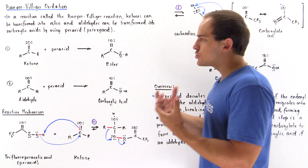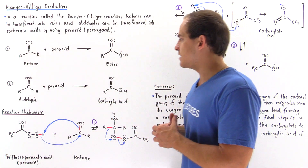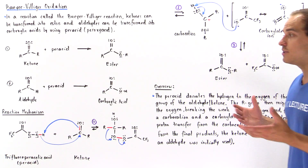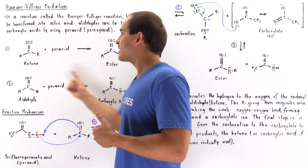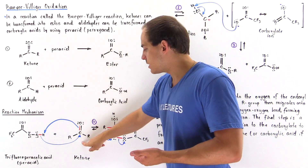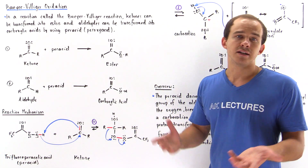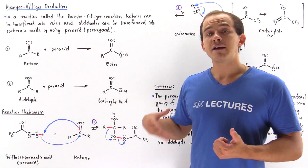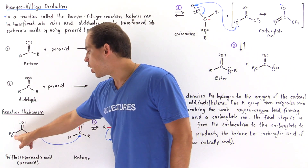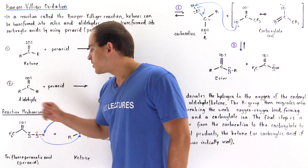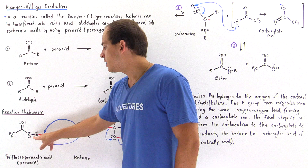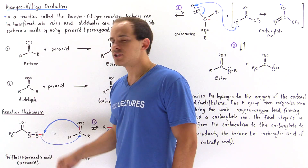The reaction mechanism for the Baeyer-Villiger oxidation of a ketone and of an aldehyde is practically the same, so we're only going to examine the reaction mechanism for the ketone case. Let's begin with our ketone and use trifluoroperacetic acid as the peroxyacid. We have a carbonyl group, a carbon bonded to three fluorine atoms, and an oxygen bonded to another oxygen — that is our O-O bond — along with the hydroxy group.